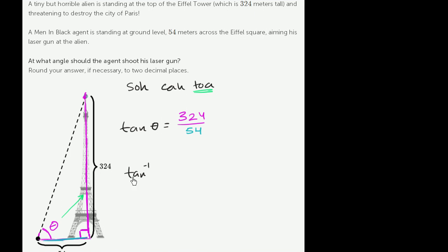Sometimes it's written as tangent with this negative 1 superscript. So the inverse tangent of tan of theta is going to be equal to the inverse tangent of 324 over 54. Just to be clear, what is this inverse tangent? This literally says, this will return what is the angle that when I take the tangent of it, gives me 324 over 54?